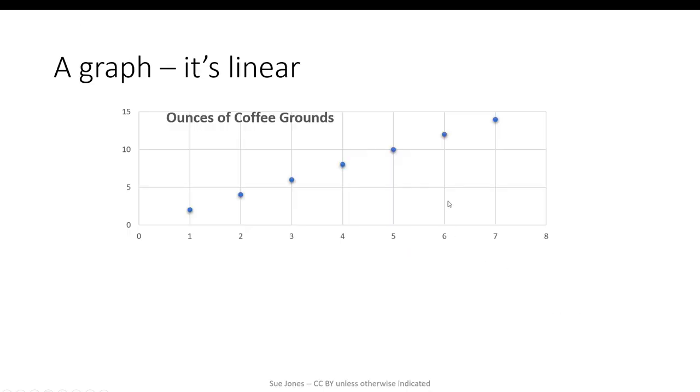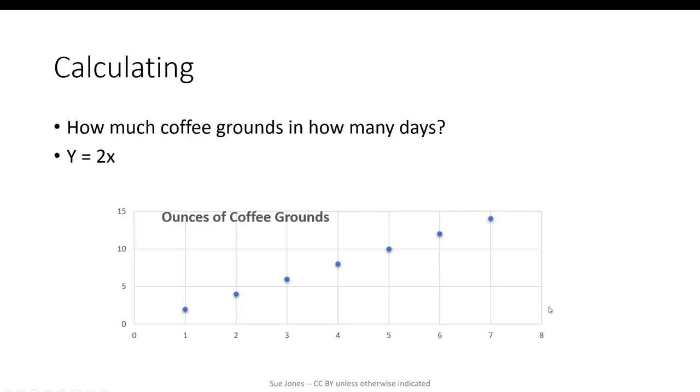If we made a graph, it would look like this. Its linear growth makes a straight line. I can make an equation to describe this change pattern. Y, the coffee grounds, equals 2 times x, the number of days I've been adding them.